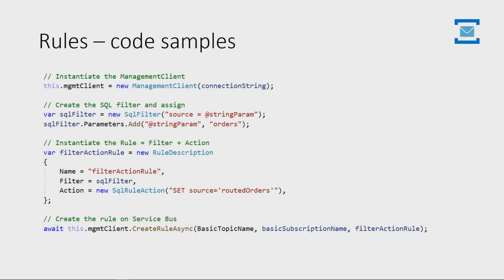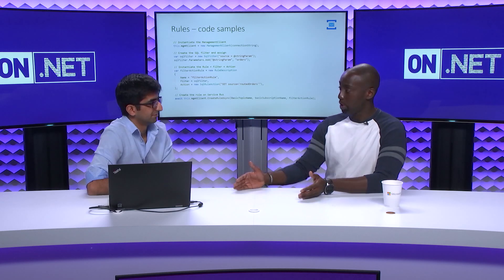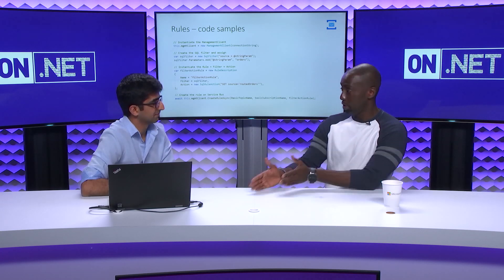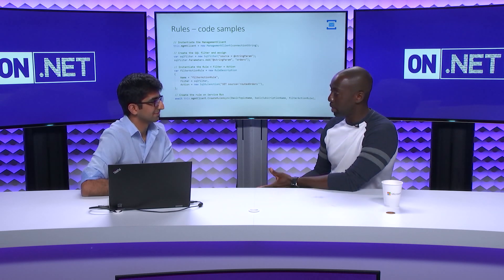Here's a quick code sample. We instantiate the management client, then create a SQL filter saying if the source is from the orders application, then an action will change the source to "routed orders" — a way of flagging that Service Bus has looked at this and routed it. Once you define the filter-action rules and create the rule with the last line of code, your client application registers it with Service Bus, the rule is established, and senders can start sending. This might be something you set up when you first create your Service Bus namespace and topic, as part of your deployment script.